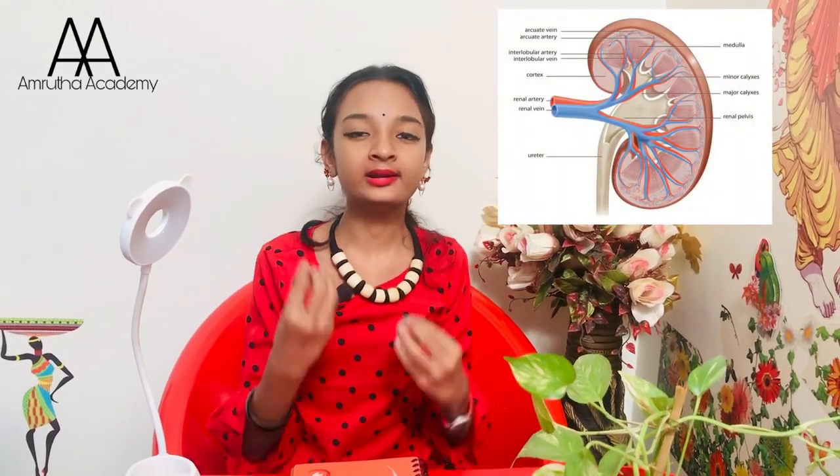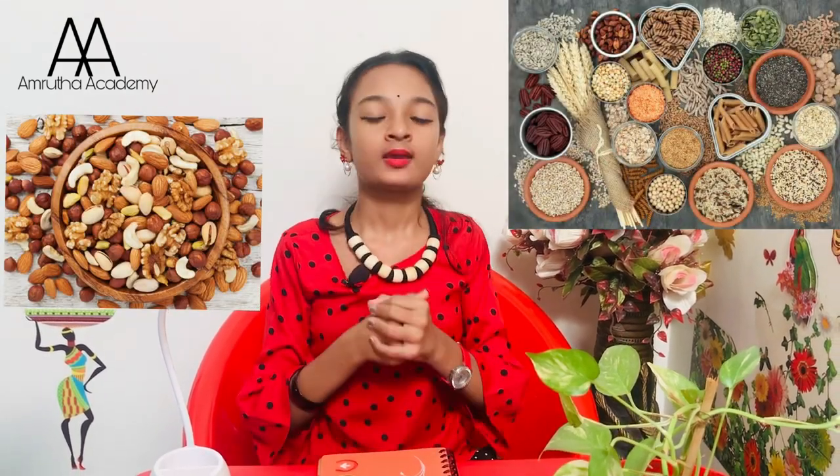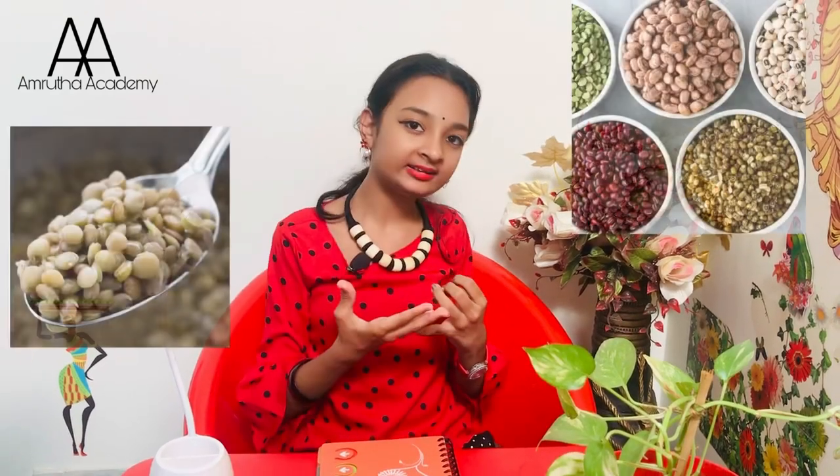The next body part is the kidney. The metals needed for the kidney are small amounts of sodium, potassium, and phosphorus. For potassium and phosphorus, include nuts, seeds, and whole wheat cereals. For a small amount of sodium, include lentils and beans in your diet.